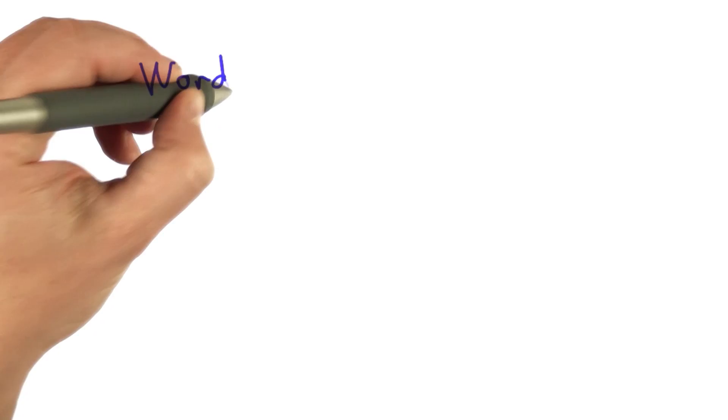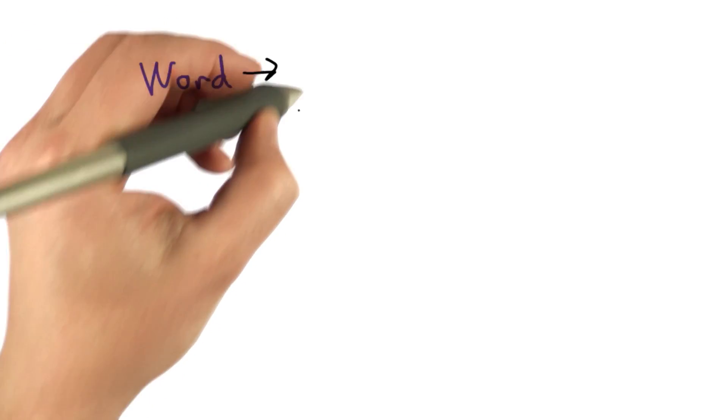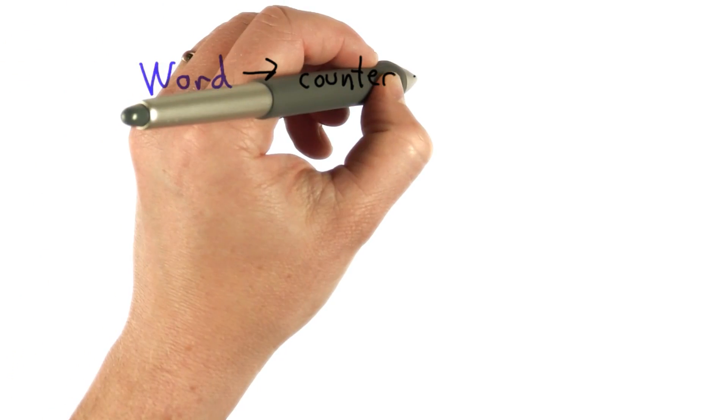And the important thing about words is we have rules for making new words. For example, we have a rule that says if we have a word, we can make a new word by adding counter in front of the old word.